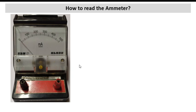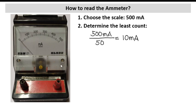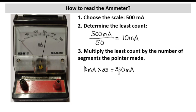How to read the ammeter? Our ammeter has a scale of 500 milliampere. We determine the least count: 500 milliampere divided by 50, because there are 50 divisions in our ammeter display, which is equivalent to 10 milliampere. So each division is equivalent to 10 milliampere. We multiply the least count of 10 milliampere by the number of segments the pointer made. For example, our pointer points at the 33rd line, so the reading is 10 milliampere times 33 equals 330 milliampere, which converts to 0.330 ampere.